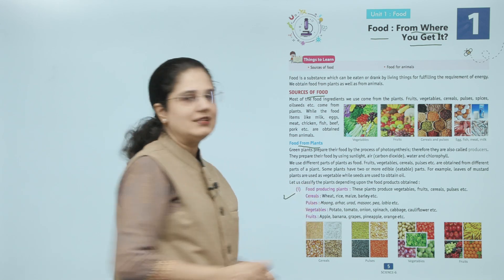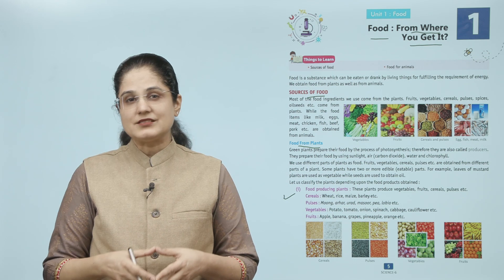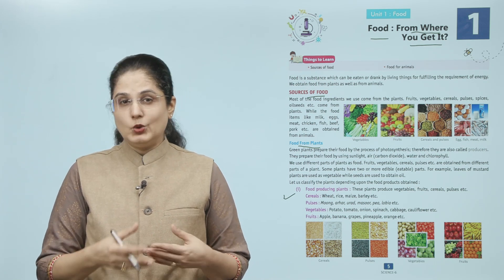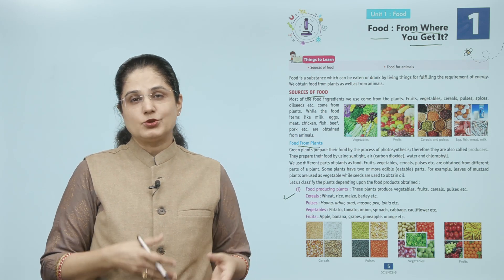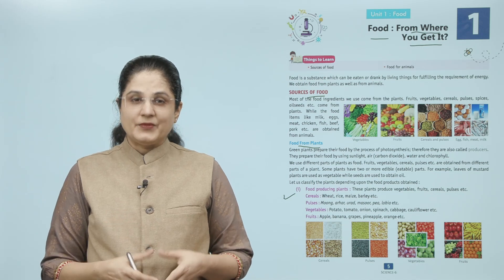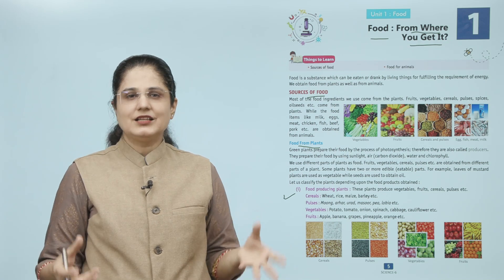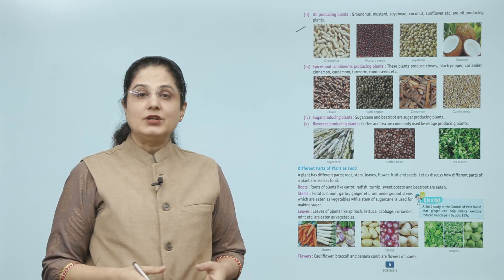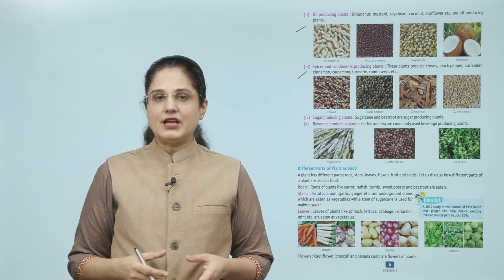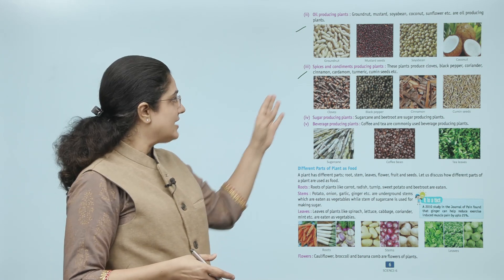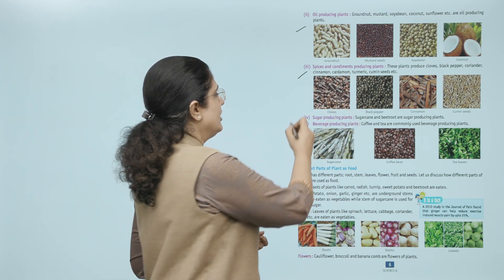Food-producing plants produce vegetables, fruits, cereals, pulses, etc. Cereals include wheat, rice, maize, barley, etc. In pulses we have moong, arhar, urad, masoor, pea, lobia, etc. Vegetables include potato, tomato, onion, spinach, cabbage, cauliflower, etc. Fruits include apple, banana, grapes, pineapple, orange, etc. These are all different parts of the plant that we consume. Oil-producing plants include groundnut, mustard, soya bean, coconut, sunflower, etc.